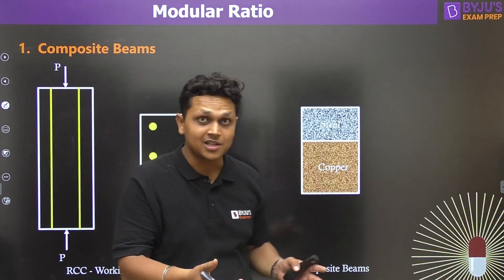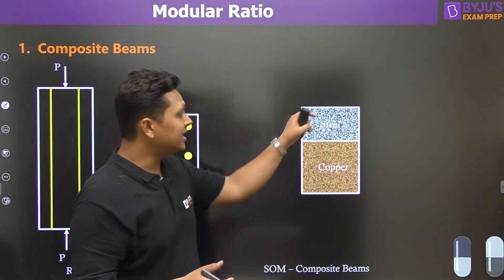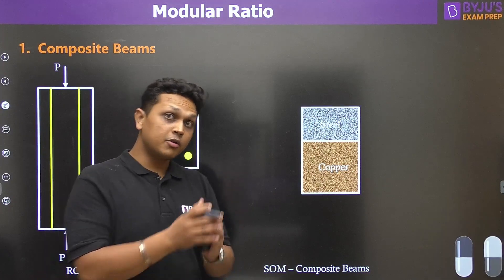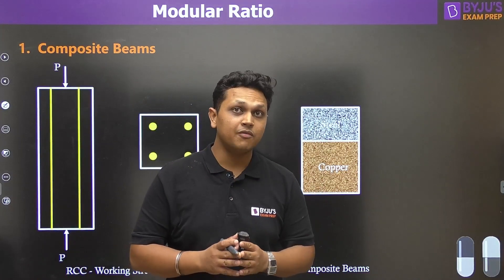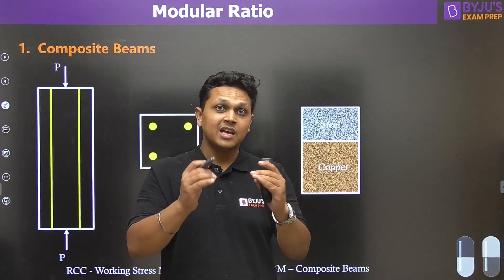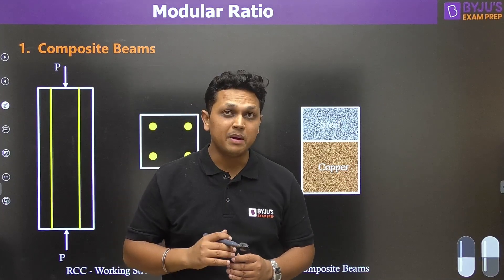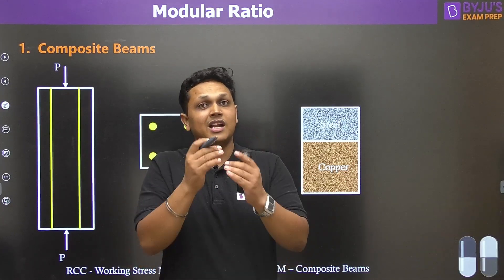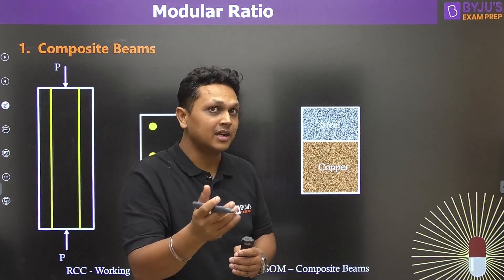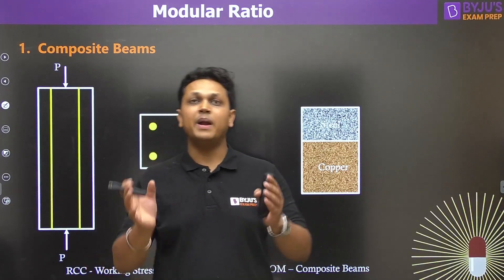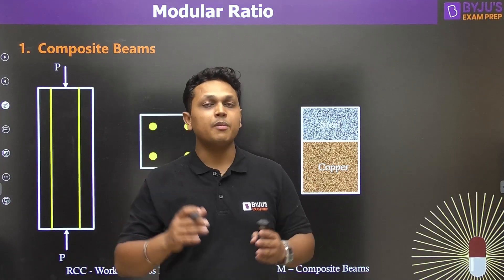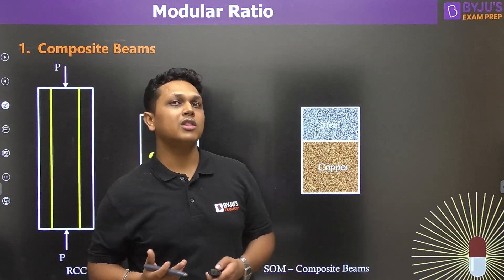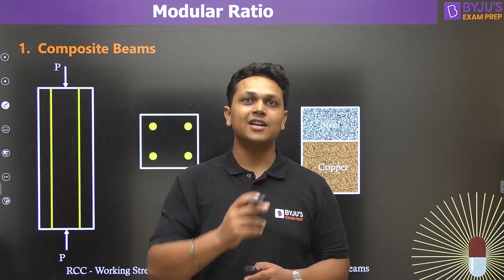In strength of materials, whenever we analyze composite beams made of two or more materials — such as a beam made of steel and copper, or a flitched beam where a wooden beam is reinforced with steel at top and bottom — those are referred to as composite beams. To analyze the effect of bending moment in such beams, we use the concept of modular ratio.